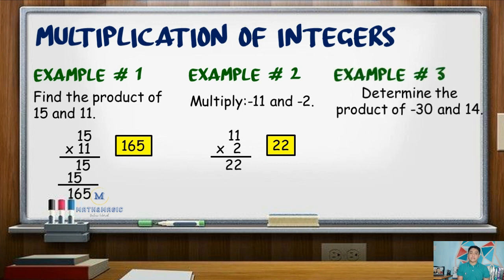Example number 3: negative 30 times positive 14. 30 times 14 is 420. Since one is positive and the other is negative, they are unlike signed, so the product should be negative.